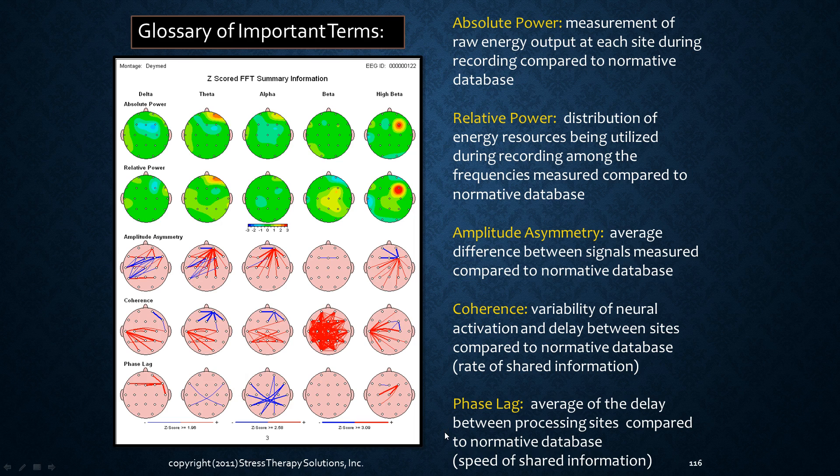The phase lag is the average of the delay between processing sites compared to normative database. So it's the speed of shared information, which also is a measure of how fast or how slow resource recruitment is. So you've heard the saying probably that neurons that fire together wire together, or neurons that wire together fire together. So when different nerves or neurons, usually groups of neurons are in a task, they're all firing together. They will fire together or come together to create a task, but then they need to decouple from each other and get into different arrangements of neurons for the next task.